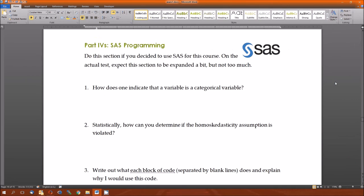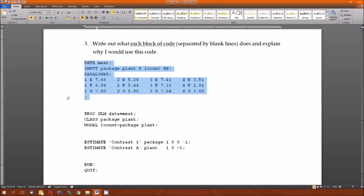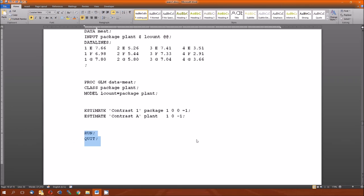Finally, section four for the SAS programming part. Number one, how does one indicate the variable's categorical variable? You do it with the class statement. Dollar sign doesn't do it. You still need the class statement in the models. Two, how do you determine if homoscedastic assumption is violated? You would use the Levene test. Three, what does each block of code do? Well, this first block of code imports the data into a dataset called Meet. Second, fits an ANOVA two-way additive model. We know it's additive because the interaction term is not present. The next block estimates two contrasts. Estimates L hat for contrast one, which is package one is equal to package four. And second one estimates L hat for contrast A, which is plant E is equal to plant G. And then this allows the code to actually run in the SAS compiler.